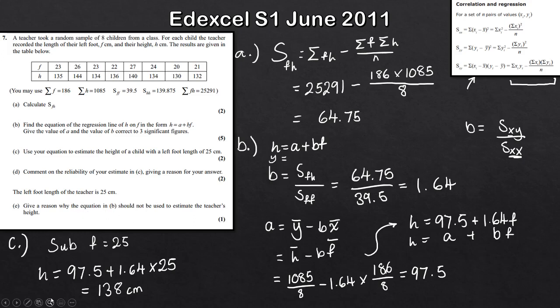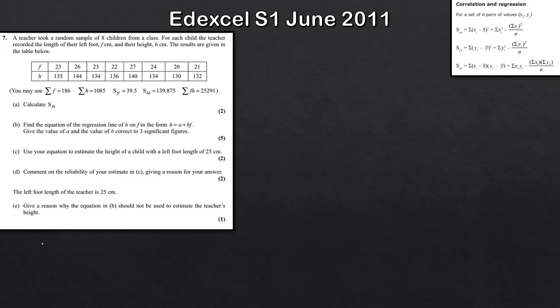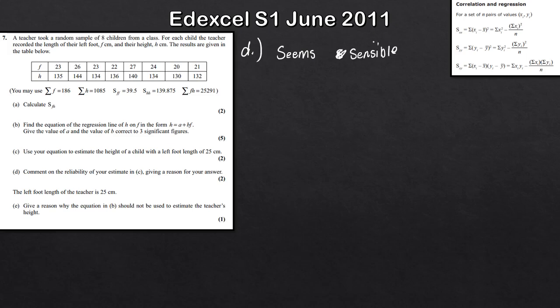Part d asks about the reliability of the estimate in part c. Considering the context — we're looking at the length of someone's left foot and their height — we would expect a positive correlation. The taller someone is, the more likely their foot is to be bigger, so this seems sensible as we would expect correlation.